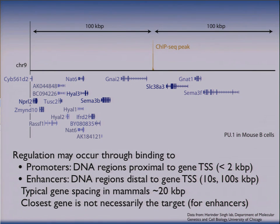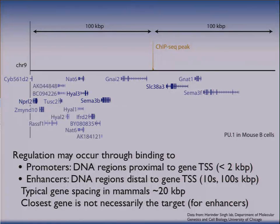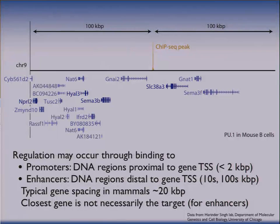This is a binding site for a transcription factor called PU1, in mice. ChIP-seq is an experimental method for measuring transcription factor binding sites genome-wide all in one shot — it's very nice. If you look at this binding site and all the genes within 100,000 base pairs of the binding site, you can count up all these genes and there are 20 of them total. In mammalian systems, promoters will be at least probably 2,000 base pairs from the start site of a gene. So if a binding site is farther than this distance from the start site of a gene, we'll call it an enhancer. This gene is the closest one and it's about 5,000 base pairs, so this is an enhancer binding site.